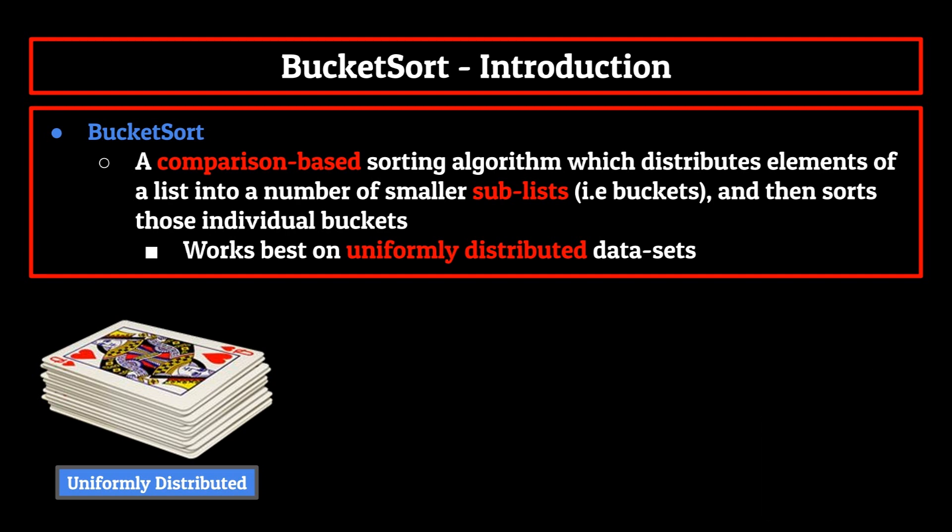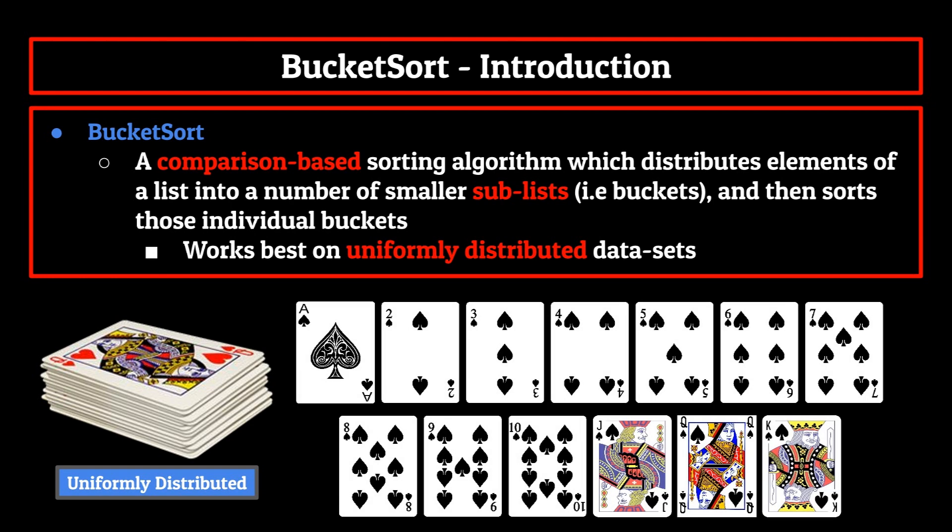Notice how we used the fact that each pile was going to be the same size to help us sort the deck. There were four cards in each pile, and we knew that there were going to be four cards in each pile. This is the methodology that is used behind bucket sort.